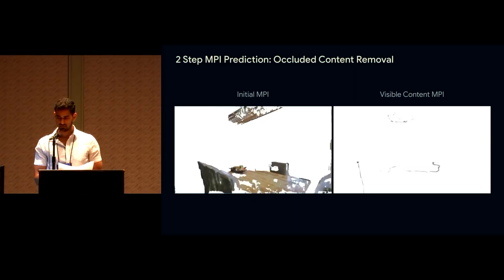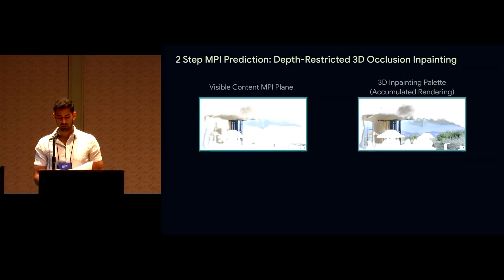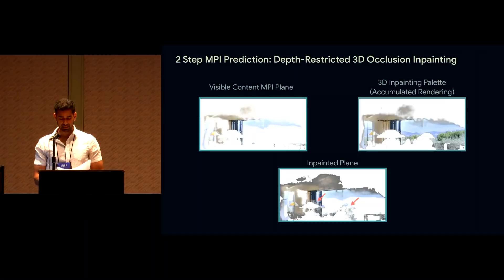So those repeated textures of the lamp we saw before are just the extruded copies at further planes peeking through. Our solution is a two-step MPI prediction procedure. First, we softly remove all occluded content by computing the visibility of each MPI coordinate in the reference frame, and then we multiply the initial MPI content shown on the left by this visibility, resulting in an MPI that only contains the first visible surface shown on the right. Next, a network inpaints the occluded content at each plane, but we restrict its inpainting palette to visible content at or behind that plane.